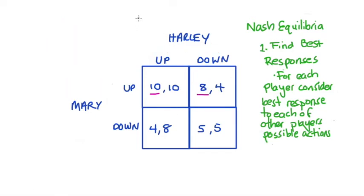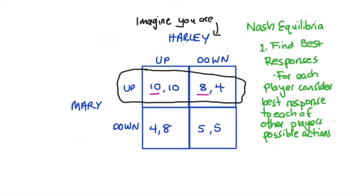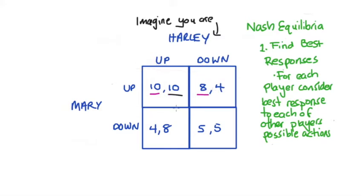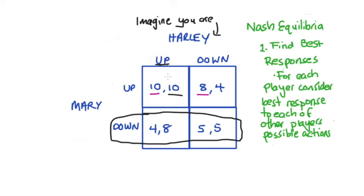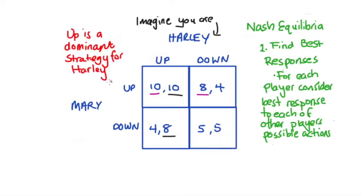Now that we've considered Mary's best responses to each of Harley's actions, we can switch players and imagine that we're Harley and consider Harley's best responses to all of Mary's possible moves. If Mary goes up we're going to focus on this row here, and remember Harley is player two so his payoff is the second number in the cell. If Harley goes up then he'll get 10; if Harley goes down he'll get four, so up is the best response. If Mary plays down, Harley could go up and get eight or down and get five, so up is the best response here. Just like the case of Mary, up is a dominant strategy for Harley since regardless of what Mary does, up is the best response.